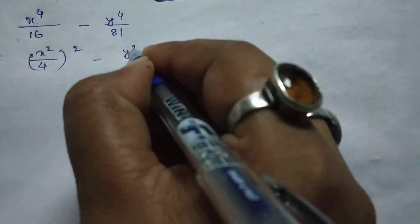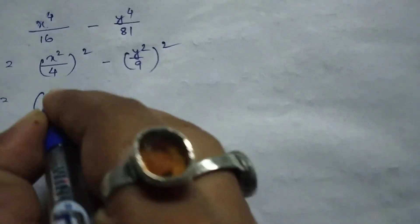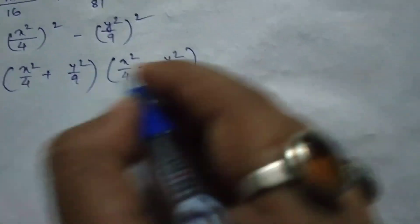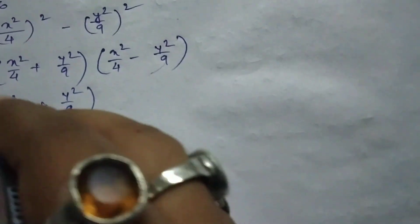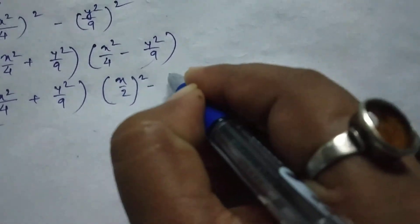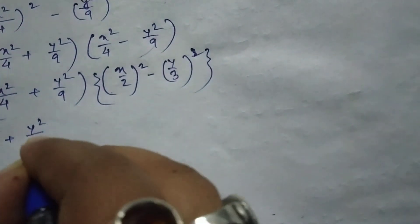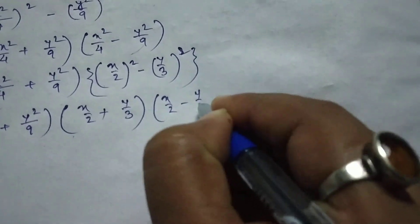x square by y minus 4, minus y square by 9. We will take the formula: a square minus b square equals a plus b into a minus b. So here x by 2 minus y by 3 gives us x square by 4 minus y square by 9, which equals x by 2 plus y by 3 into x by 2 minus y by 3.